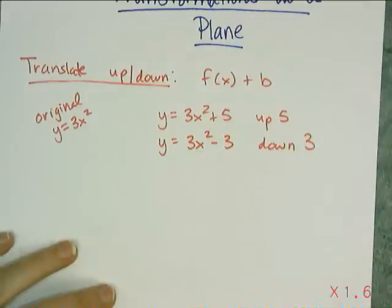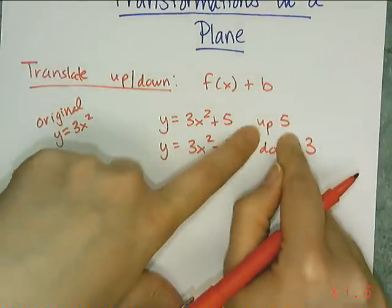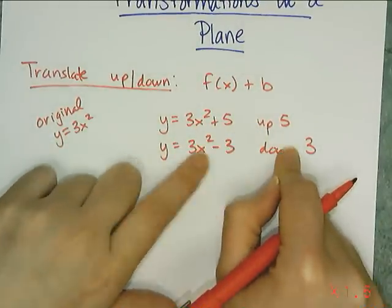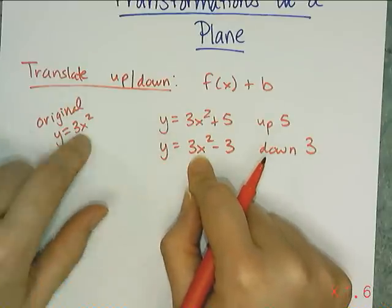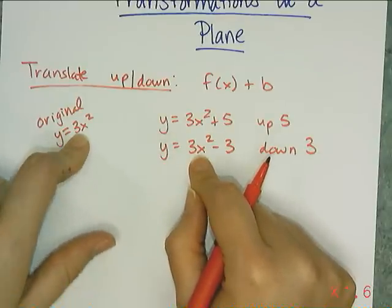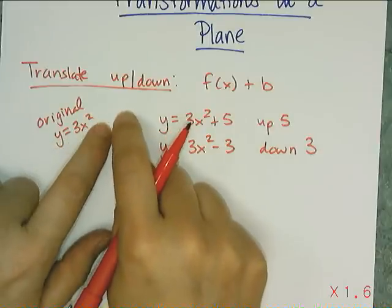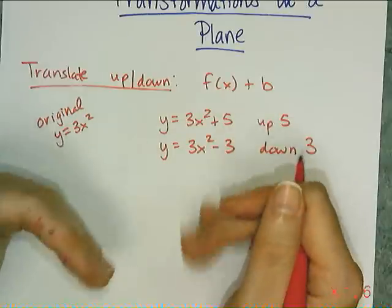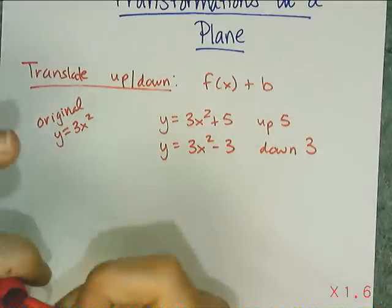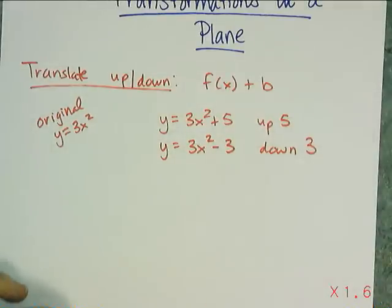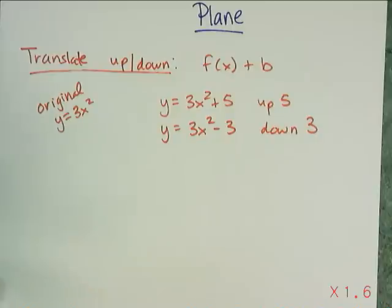So if I want to translate a graph up or down, if I want to move it up, I add something. If I want to move it down, I subtract something, and it's at the end of the rule. And this doesn't just work for quadratics, it'll work for linears, too. You take whatever the rule is, at the very end of the rule, you just tack on a plus or minus, and it's going to shift the whole graph up or down. And that doesn't matter if it's linear, quadratic, exponential. Later on, you're going to learn about sine graphs, and it works for all of them.